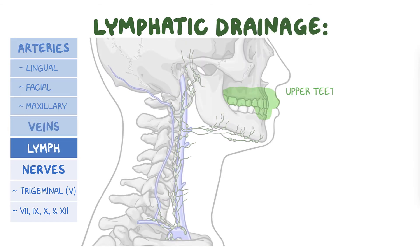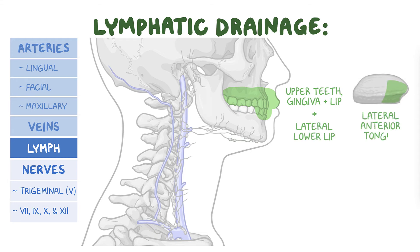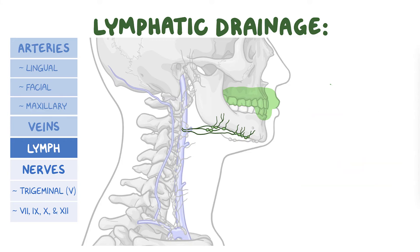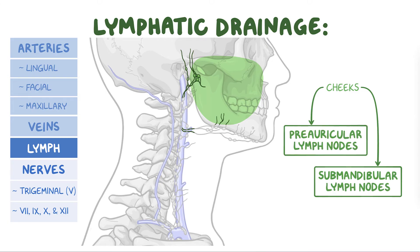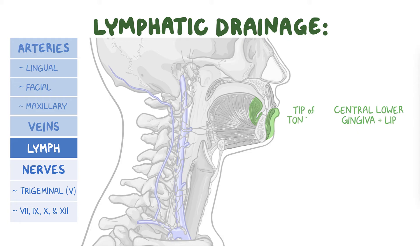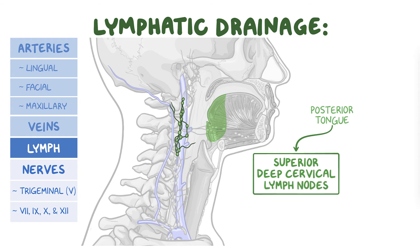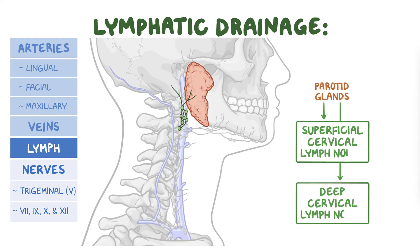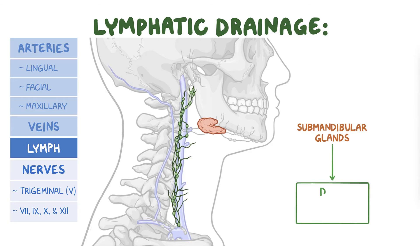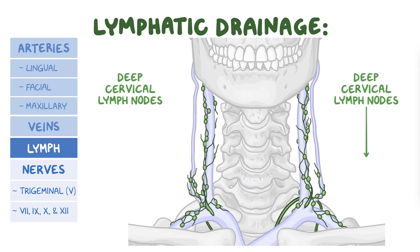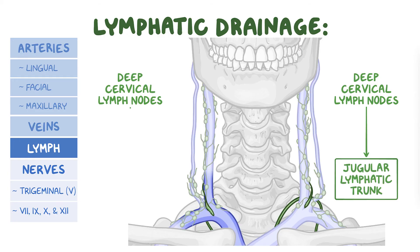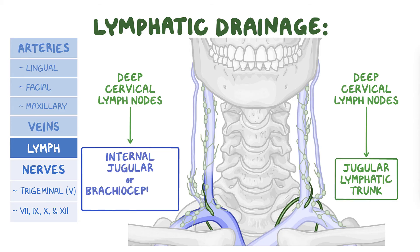With respect to the lymphatic drainage, the upper teeth, gingiva and lip, lateral part of the lower lip, and the lateral portion of the anterior part of the tongue drain into the submandibular lymph nodes. The cheeks drain into the submandibular and preauricular lymph nodes. The central part of the lower gingiva and lip and tip of the tongue drains into the submental lymph nodes. The medial portion of the anterior two-thirds of the tongue drains into the lower deep cervical lymph nodes, and the posterior portion of the tongue drains into the superior deep cervical lymph nodes. The parotid glands drain into the superficial and deep cervical lymph nodes, whereas the submandibular glands drain into the deep cervical lymph nodes. Eventually, the deep cervical lymph nodes drain via the jugular lymphatic trunk into the thoracic duct on the left side and the internal jugular vein or brachiocephalic vein on the right side.